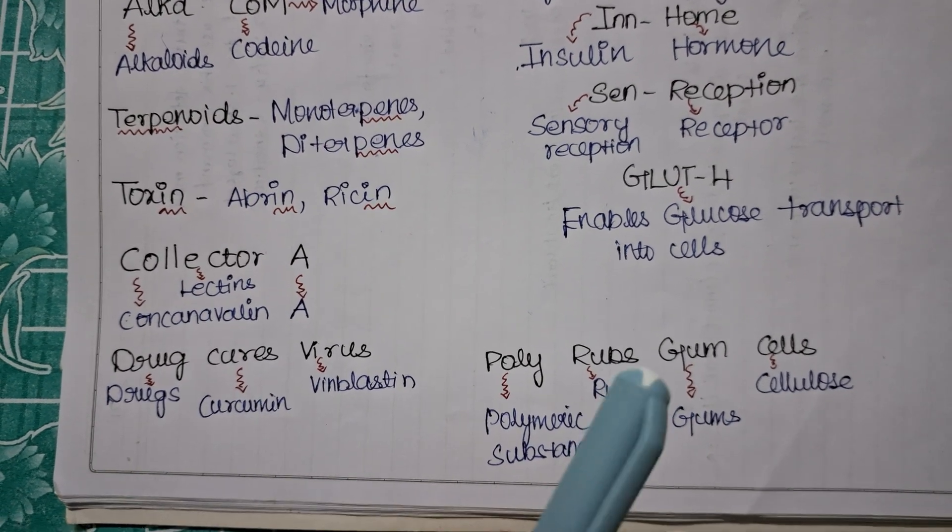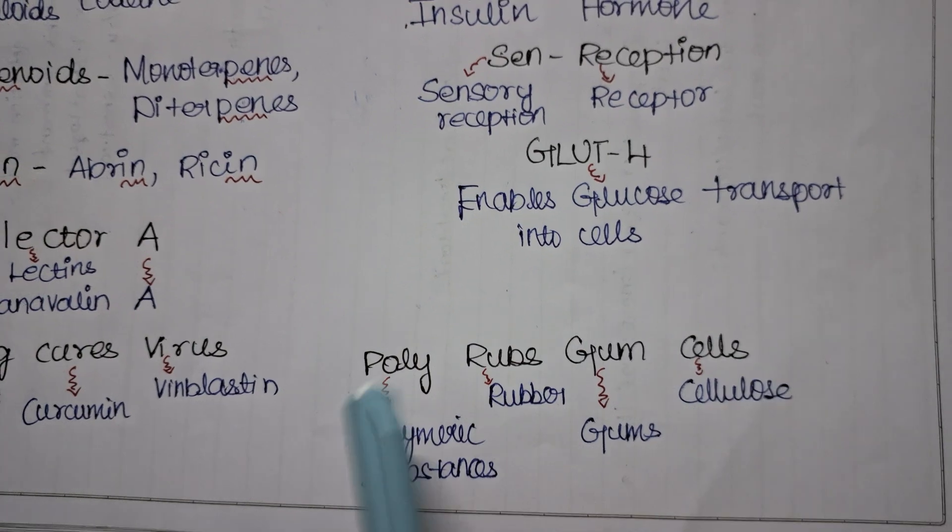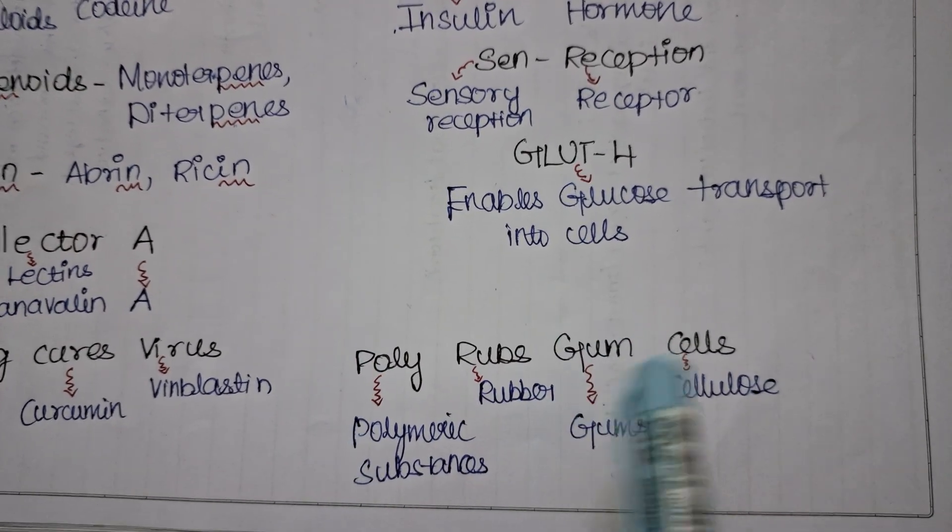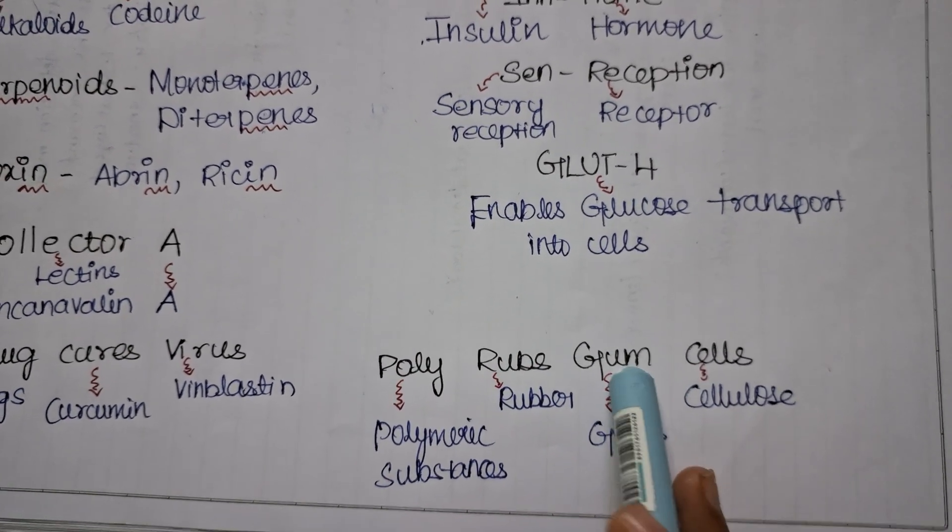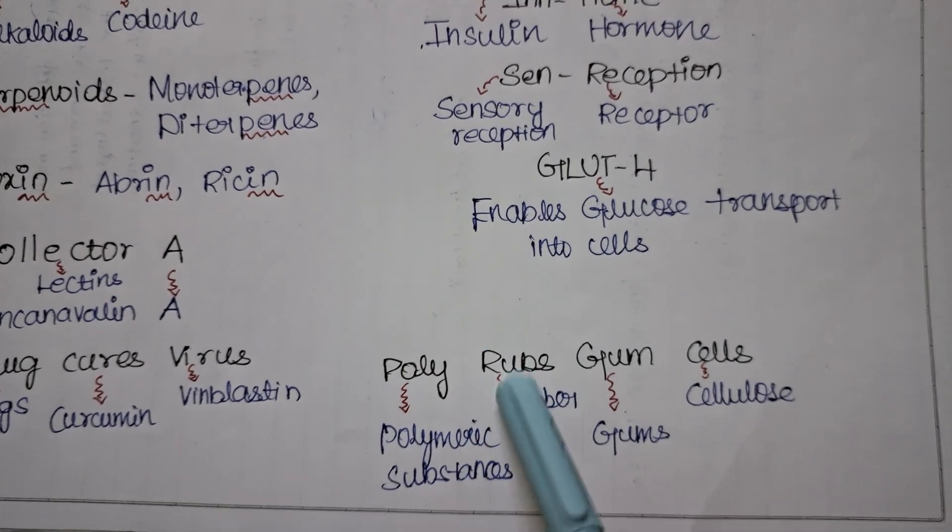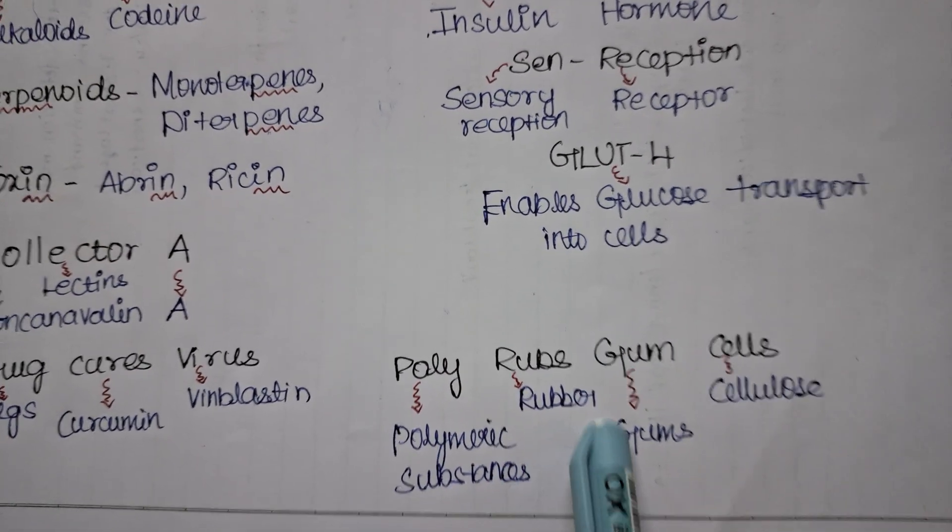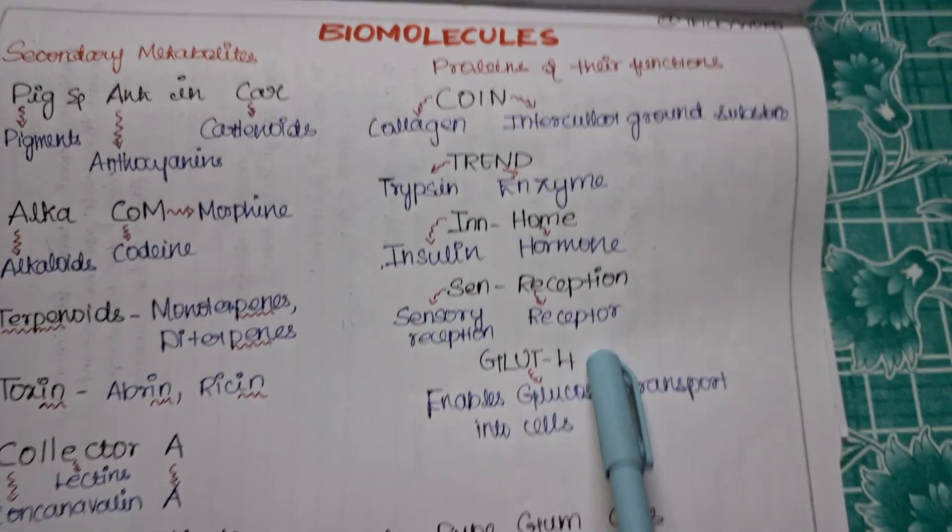Now the last one for your secondary metabolites will be POLY RUBS GUM CELLS. POLY RUBS GUM CELLS. So POLY is for your polymeric substance, RUB is for rubber, GUM is for gum, CELLS for cellulose. So this poly will be rubbing, used in rubbing the gum cells. So polymeric substance, rubber, gum, cellulose. So these are the tricks for your secondary metabolites.